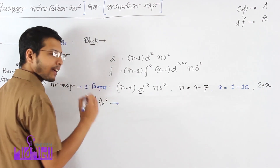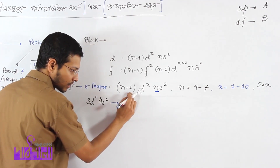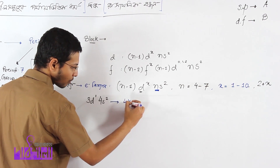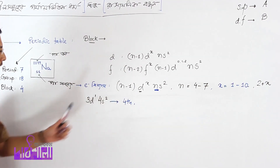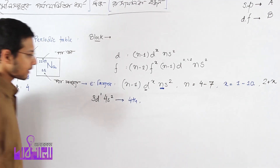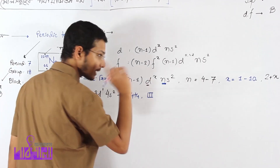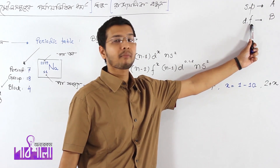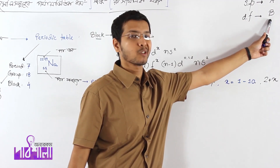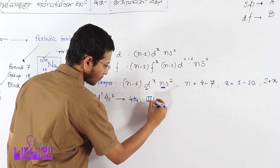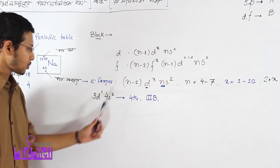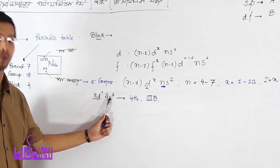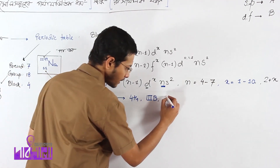For the example 3D1, 4S2: the n value gives us the 4th period. This is 2 plus 1 equals 3. The D orbital is involved in the subgroup B. So that means the group is 3B, and this is the D-block.